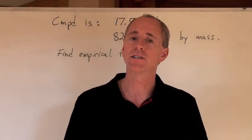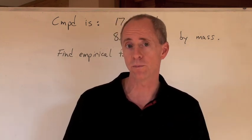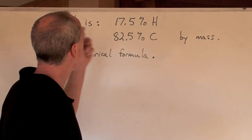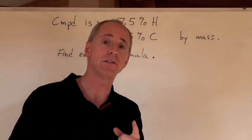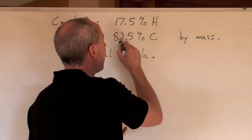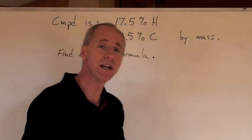Mass percent calculations help us determine something called the empirical and then the molecular formula of a compound. So here's a type of question that you can be asked. A compound is, by mass in terms of its percent, 17.5% hydrogen and 82.5% carbon. The question is, find the empirical formula.